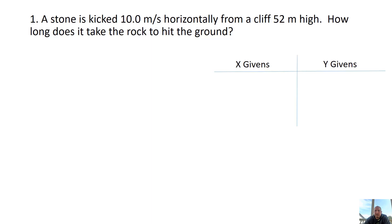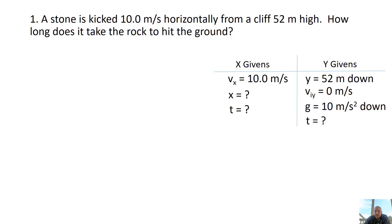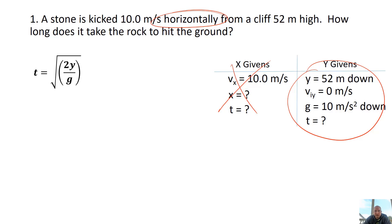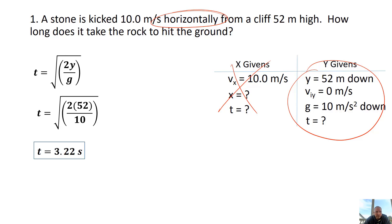Problem 1: A stone is kicked 10 meters per second horizontally from a cliff 52 meters high. How long does it take the rock to hit the ground? They give you the vx — horizontally kicked — and it's going to fall 52 meters. Since it's kicked horizontally, viy is zero. Using the specialized equation with y and acceleration due to gravity, plugging in the numbers, I get 3.22 seconds.